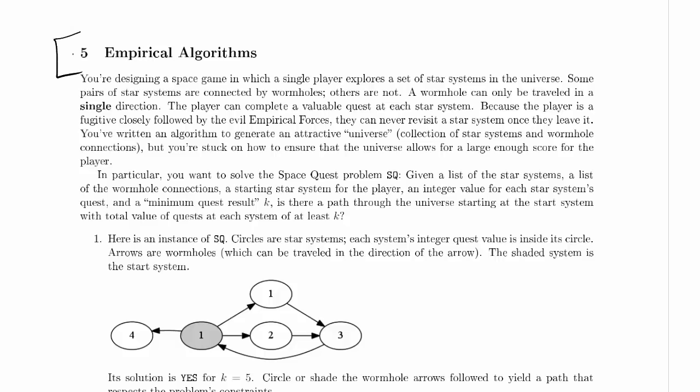We're working on problem five of the practice exam. You're designing a space game in which a single player explores a set of star systems in the universe. Some pairs of star systems are connected by wormholes, others are not. Sounds like a graph to me. A wormhole can only be traveled in a single direction. Sounds like a directed graph.